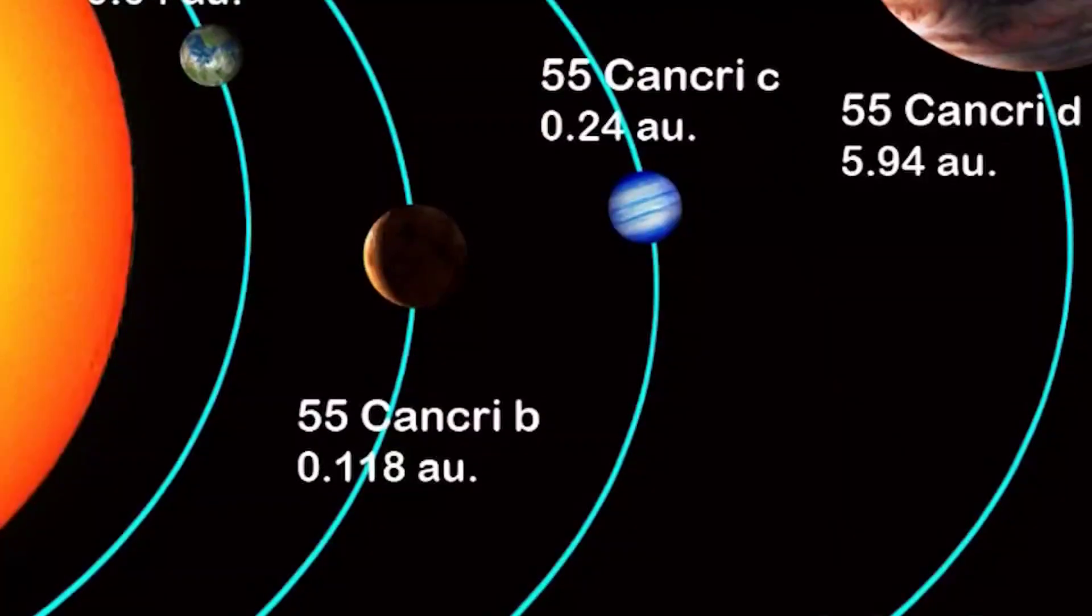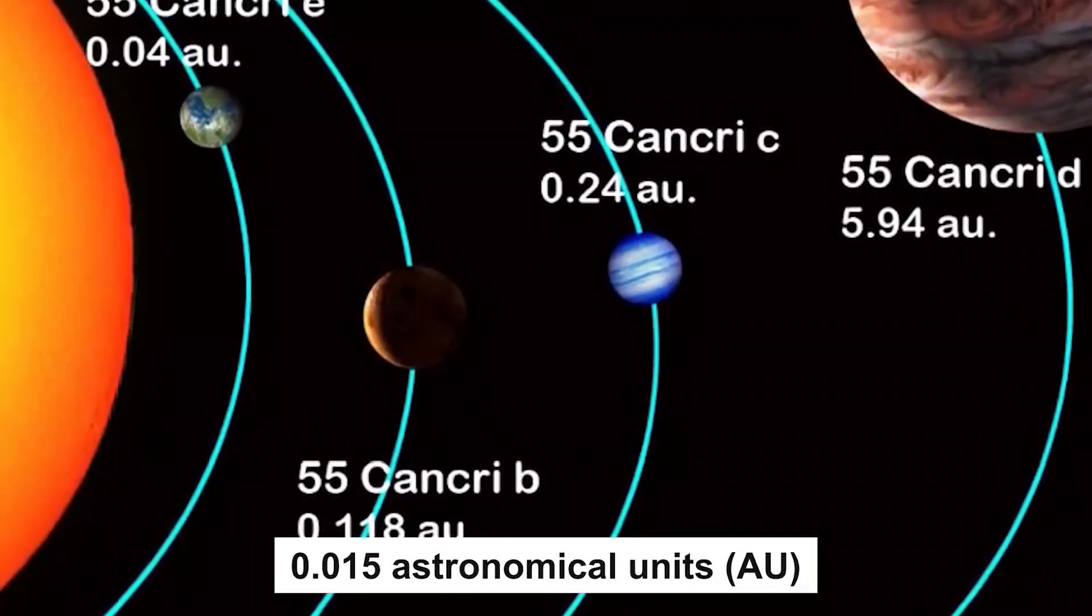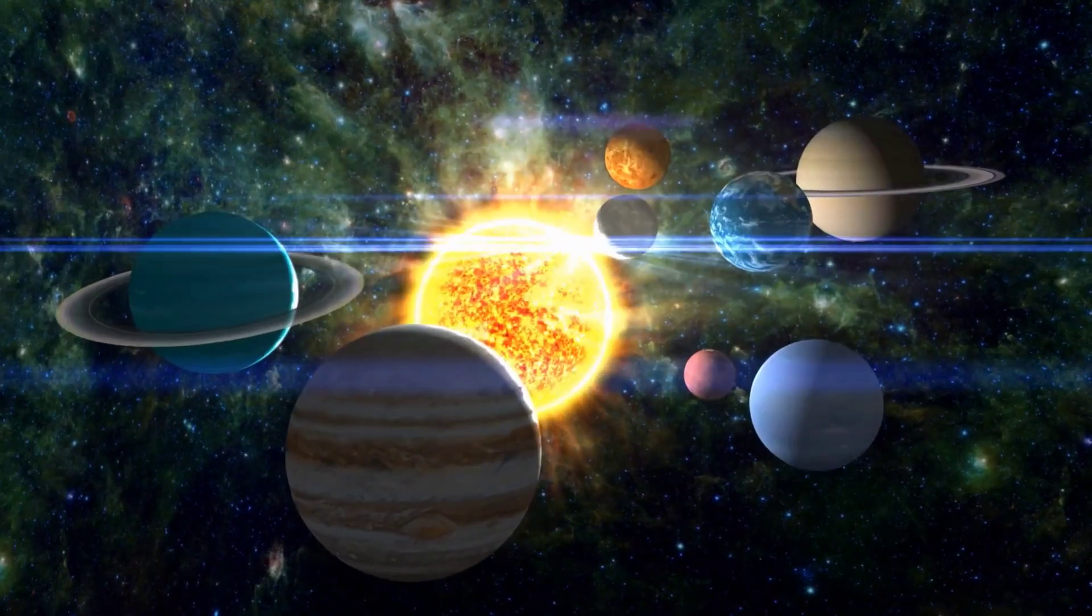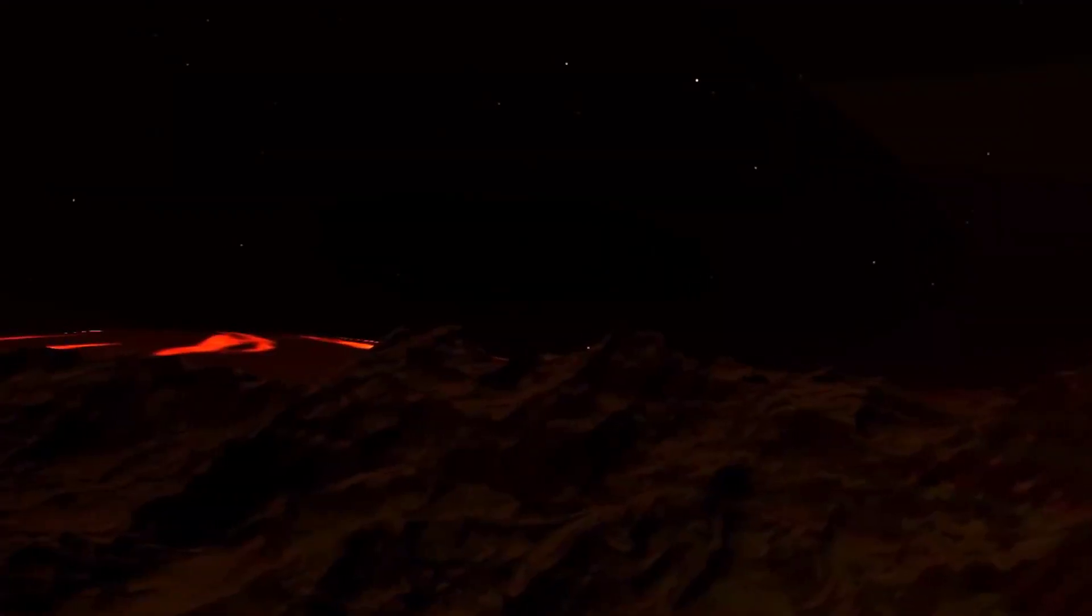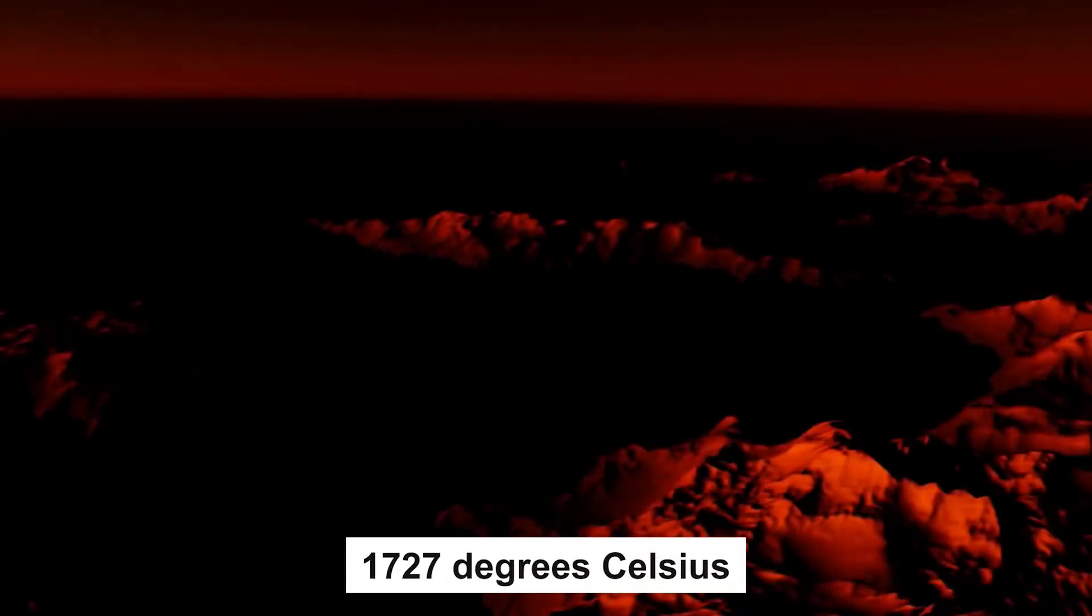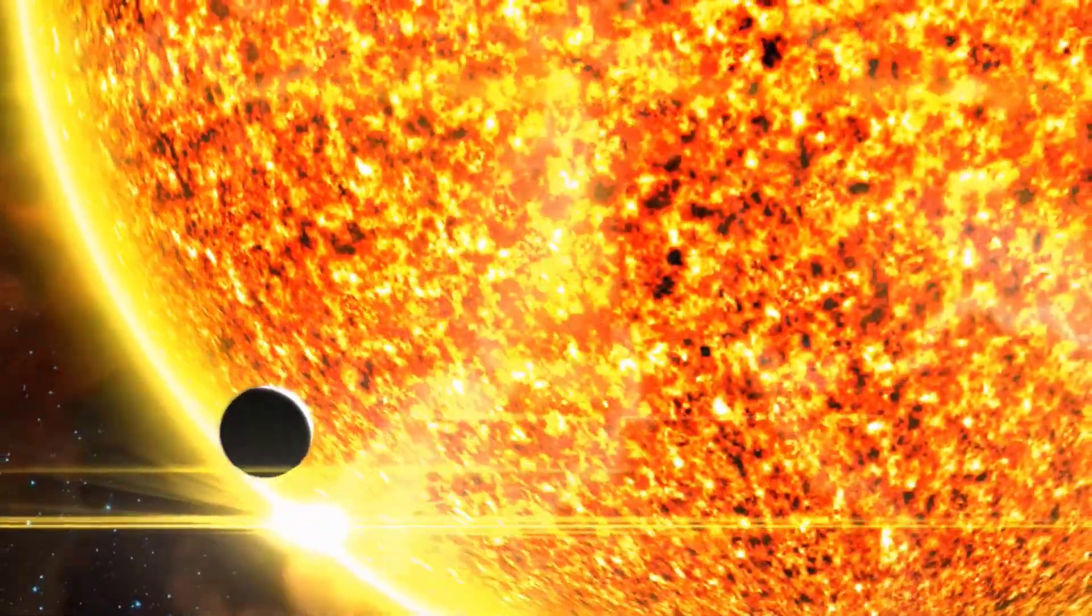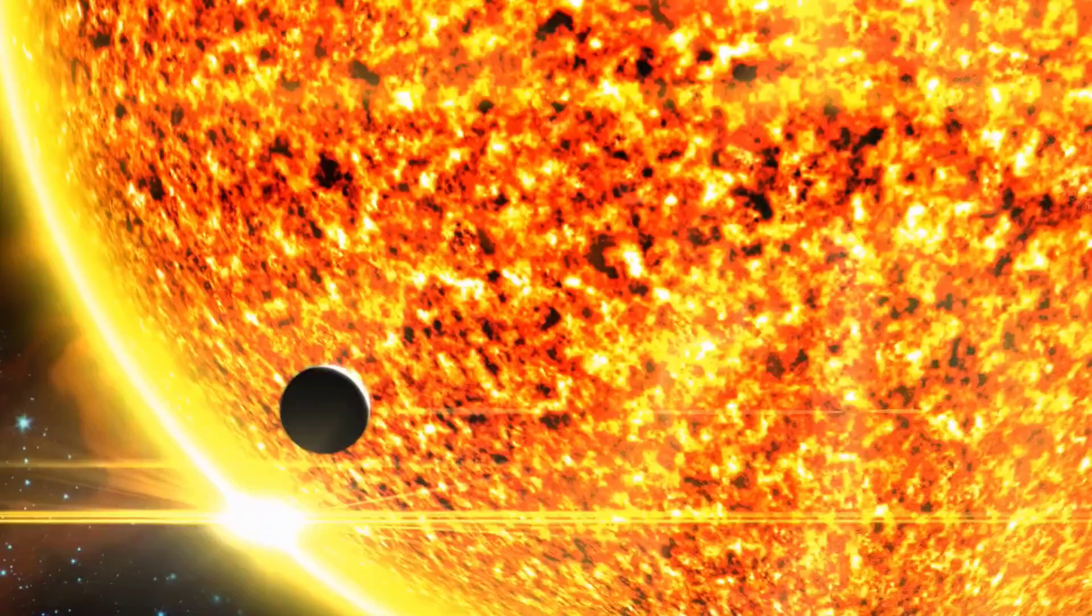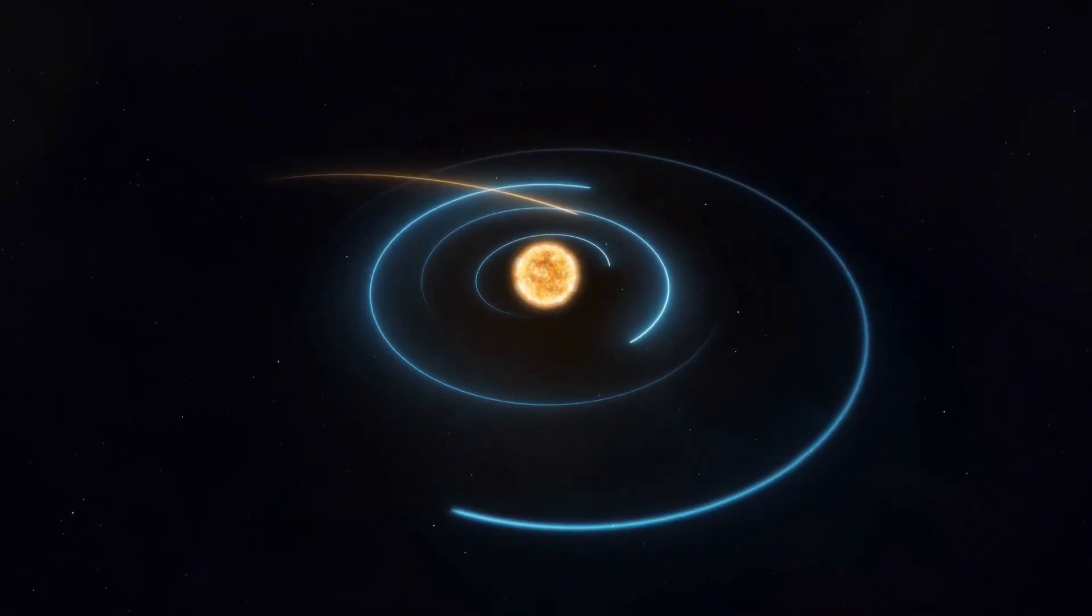It orbits its star at a distance of only 0.015 astronomical units (AU), making it closer than Mercury is to the Earth's Sun. With a scorching surface temperature of around 2,000 Kelvin, or 1,727 degrees Celsius, it is one of the hottest exoplanets in existence. This heat is due to the planet's proximity to its star, as it completes a full orbit in only 18 hours.